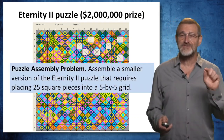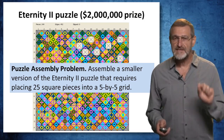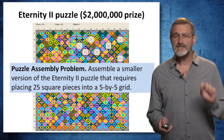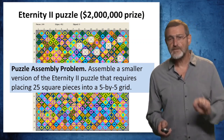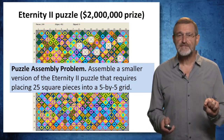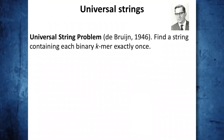We do not ask you to solve the Eternity 2 puzzle — it's extremely complex. But we ask you to solve a simpler puzzle assembly problem: assembling a smaller version that requires placing 25 square pieces into a 5×5 grid, as opposed to the Eternity 2 puzzle where you have to place 256 pieces into a 16×16 grid. Seventy years ago, a Dutch mathematician, Nicholas de Bruijn, thought about solving a different puzzle: finding a string containing each binary k-mer exactly once. He called these strings universal strings.